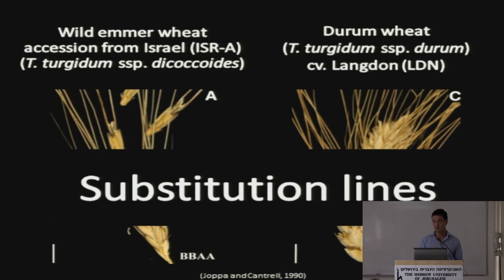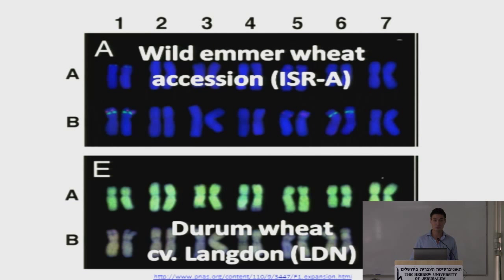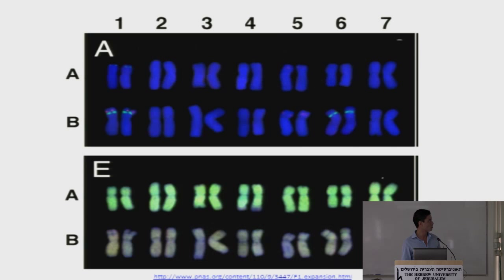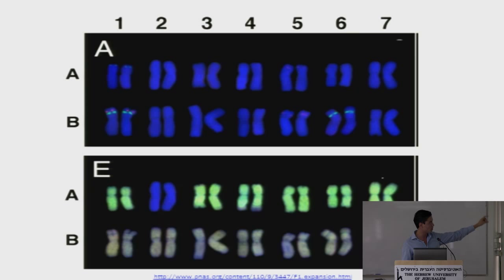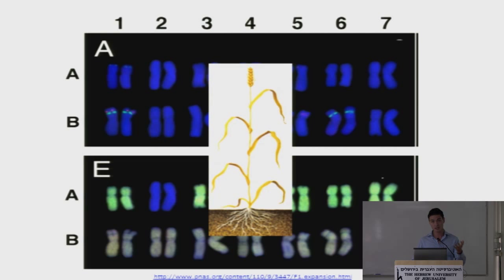A substitution line means: we have the genome from the wild wheat and the genome from the commercial wheat. In a long process, just a pair of chromosomes was transferred from the wild to the commercial variety. They created 14 substitution lines using several chromosome pairs. My colleague Guy Golan is studying all of them to identify interesting characteristics.